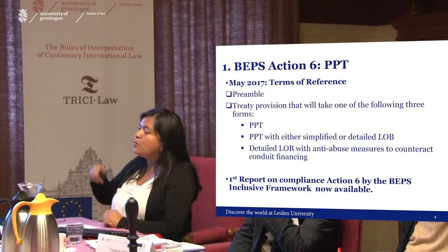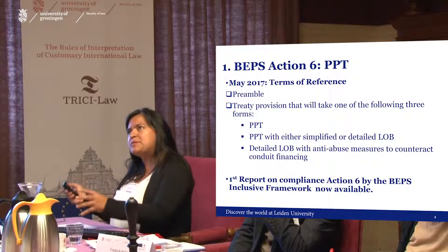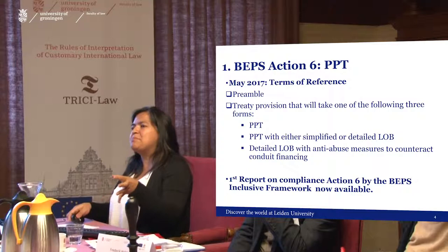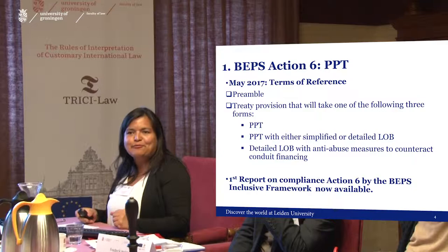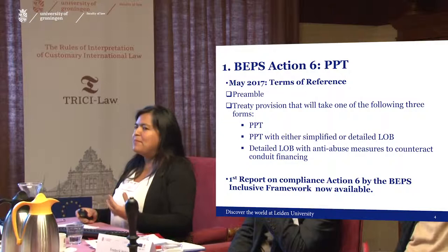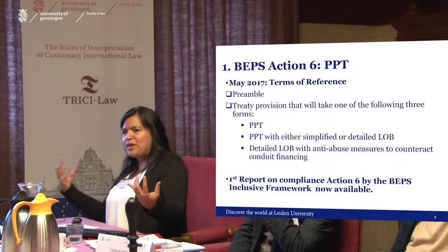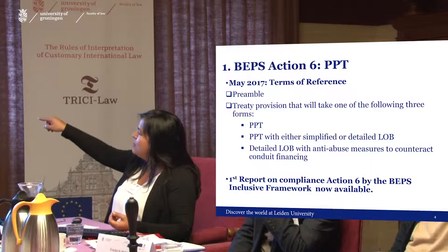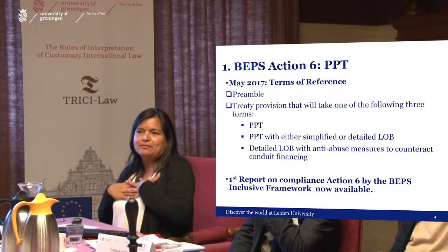Very few countries are also adopting the simplified or detailed limitation of benefits. I'm focusing only on the principal purpose test, because the limitation of benefits is essentially a checklist, while the PPT as a principle allows for much more interpretation. The third option — the detailed LOB — is, interestingly, the US approach. The US says they were part of the BEPS project but will not sign the MLI, so they negotiated to do it their own way. The US is the exception.